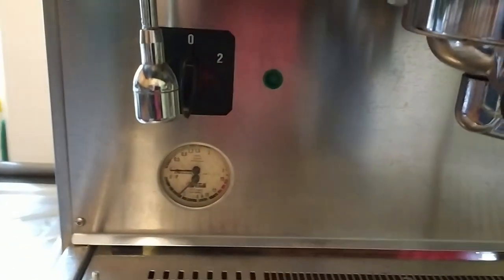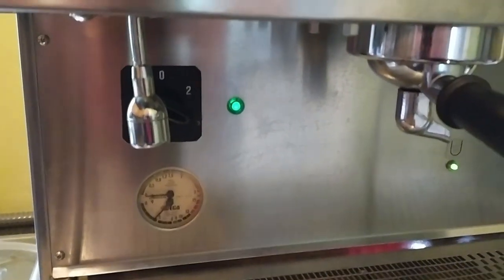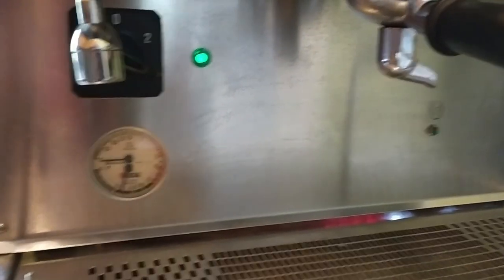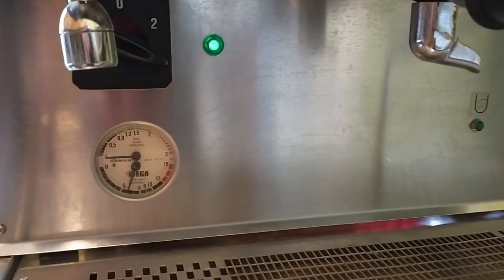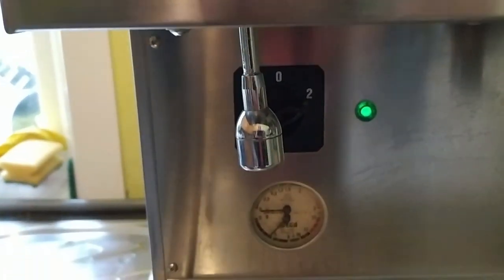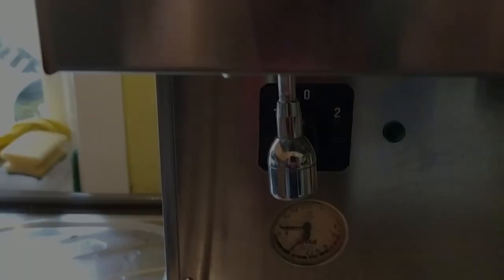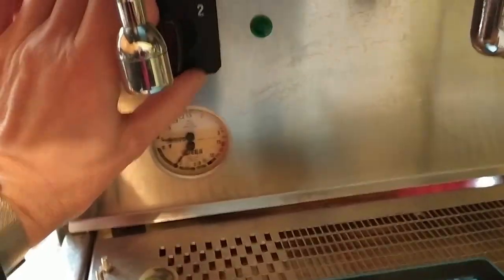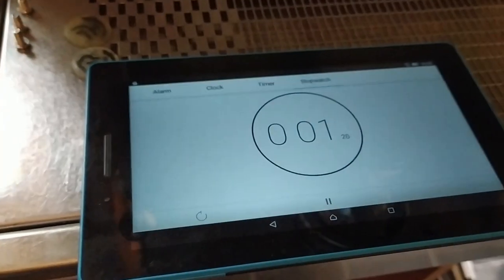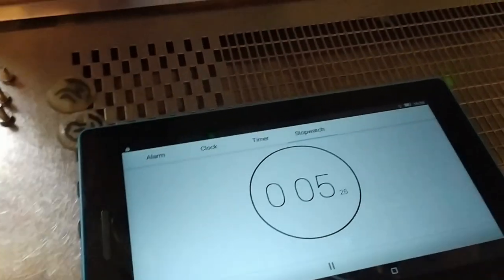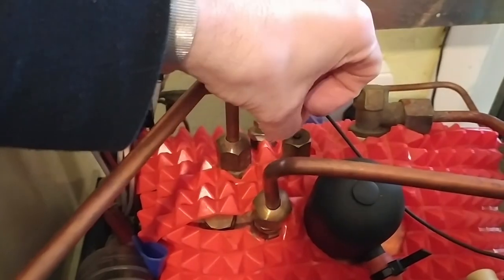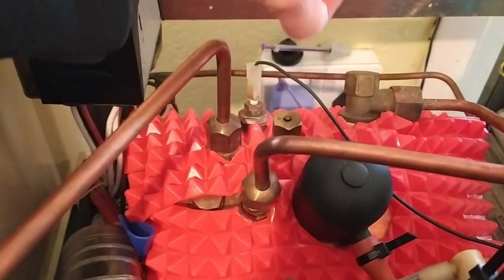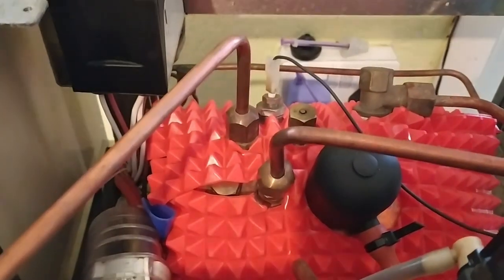Let's switch everything on, see if it needs any water. Actually I need the phone to time this. I'm going to go ahead and switch that on and start the stopwatch on the tablet. First of all we'll be looking to see when the anti-vac valve pops up and it starts building up pressure, and then obviously see how long it takes to get up to full pressure.